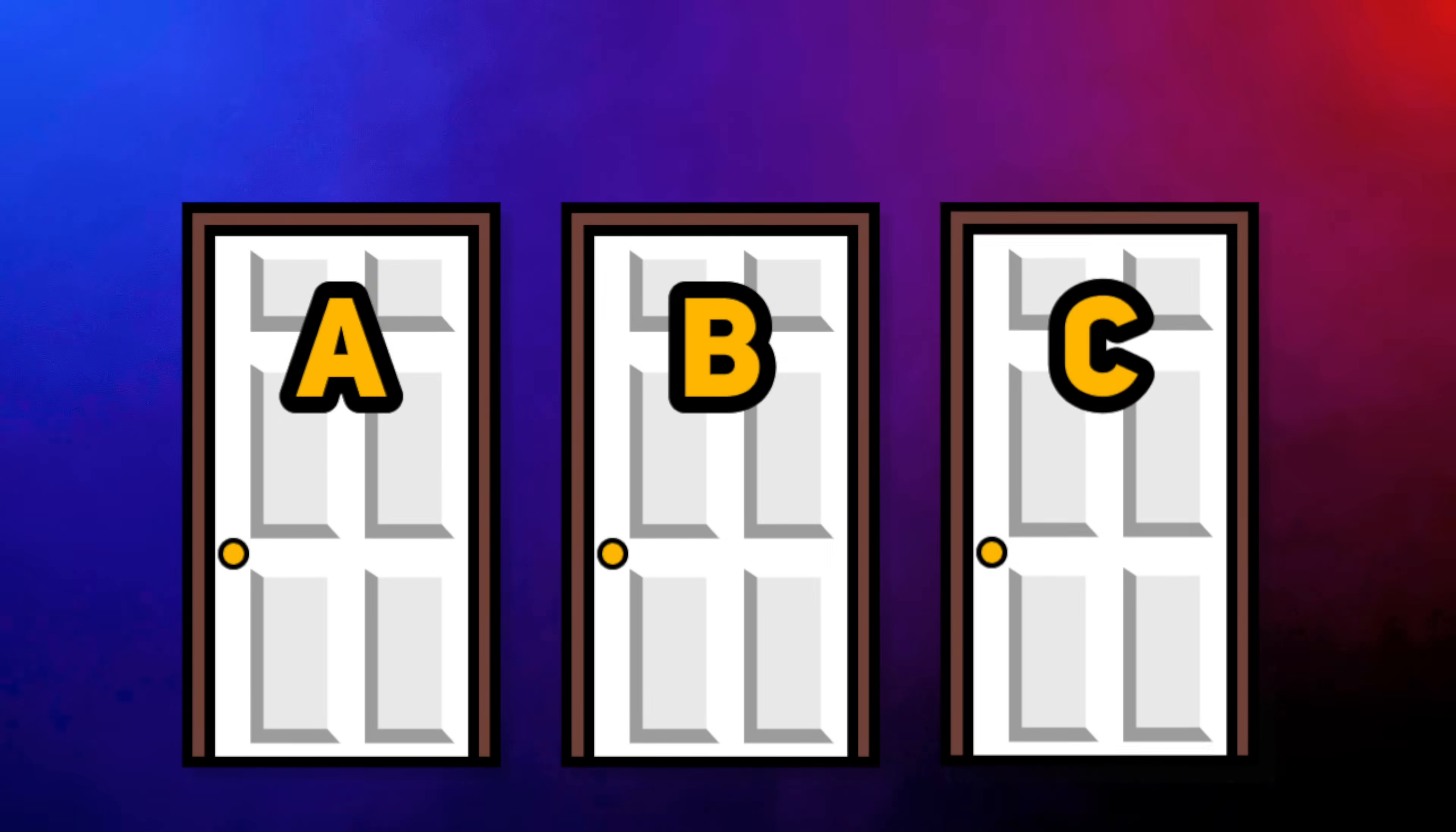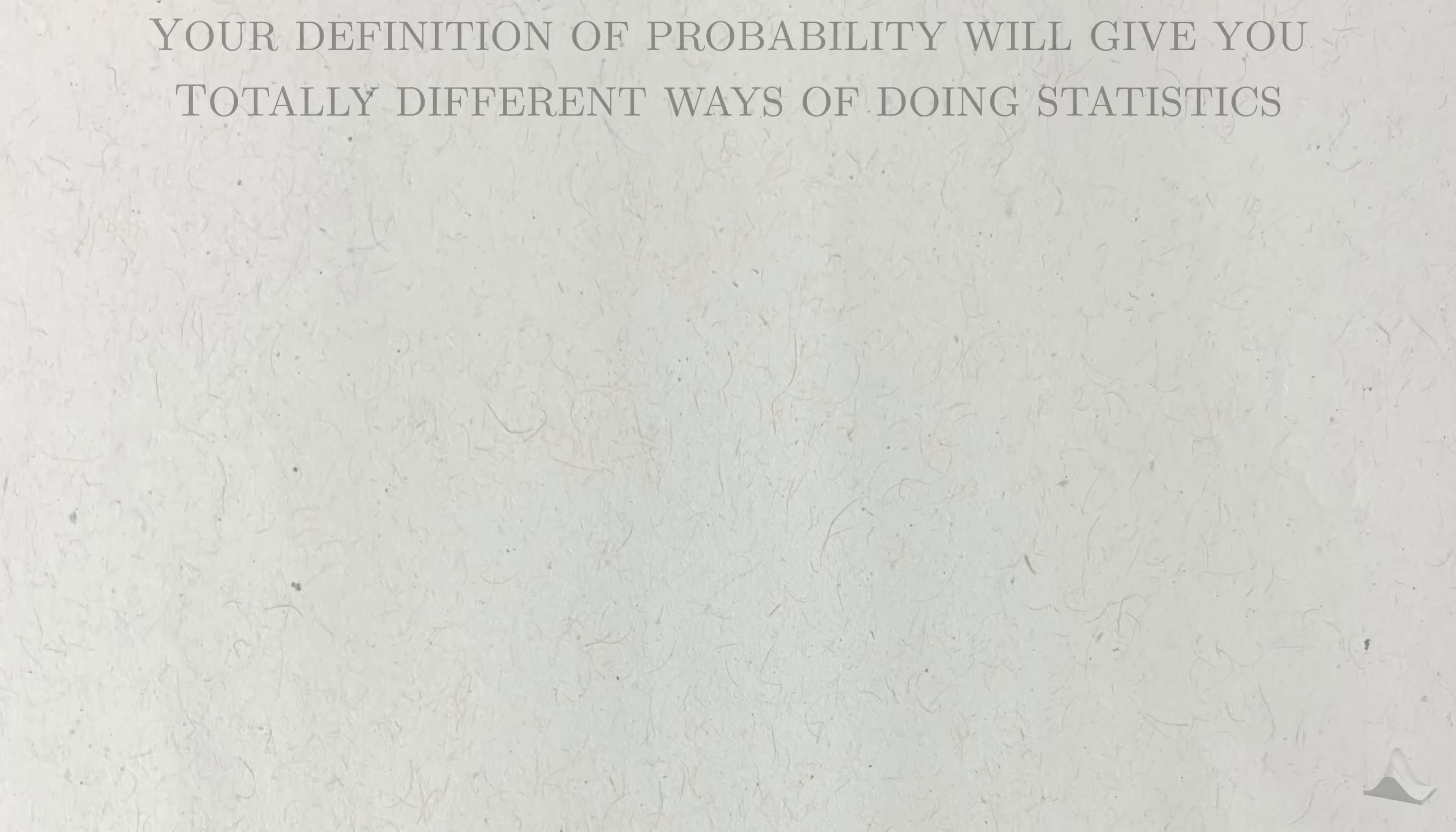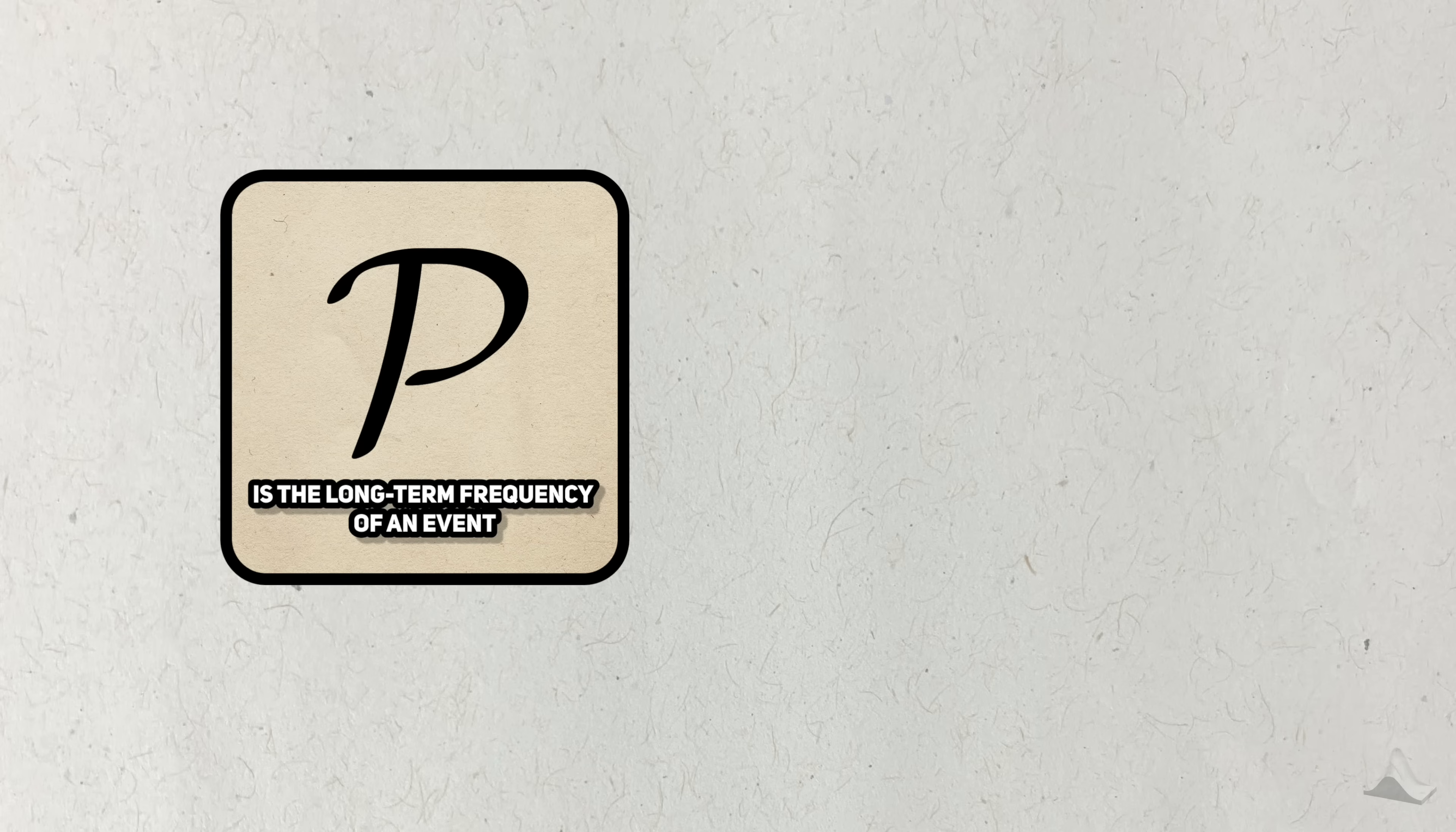The Monty Hall problem is actually a perfect springboard for discussing a question at the heart of statistics. Despite the prominent role that probability plays in statistics, it's a surprisingly hard concept to pin down. Depending on how you interpret it, you can get totally different ways of doing statistics. If you view probability as a long-run frequency of an event, then you get frequentist statistics. The dominant mode of statistics taught today.